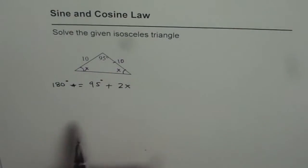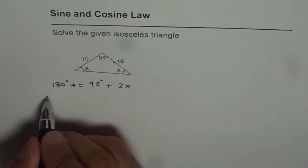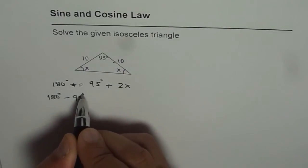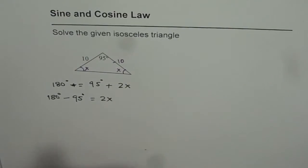So from here we can solve for x. We have 180 degrees minus 95 degrees equals 2x and that is how much? That is 180 minus 95, 85 degrees.